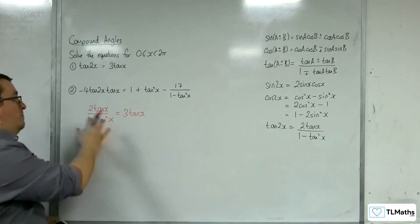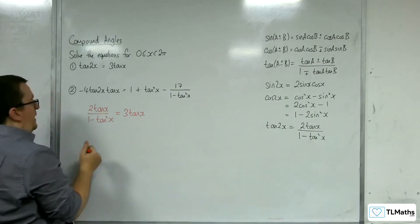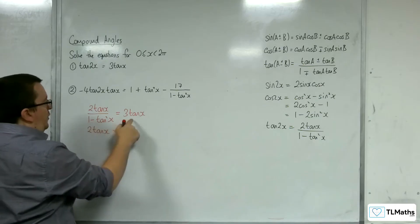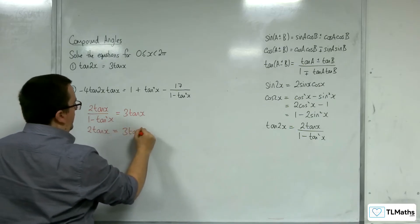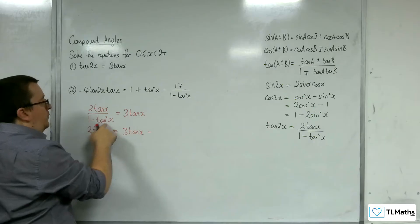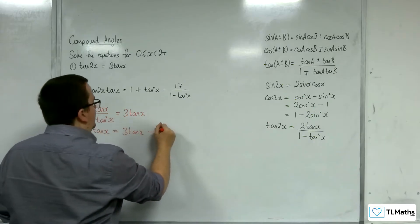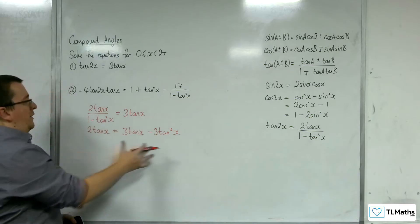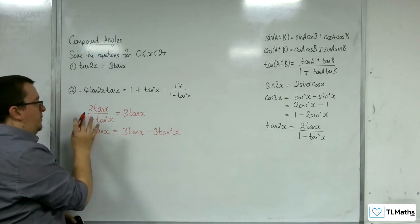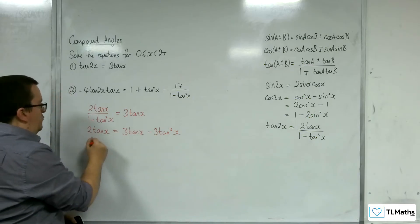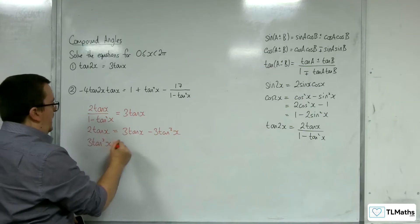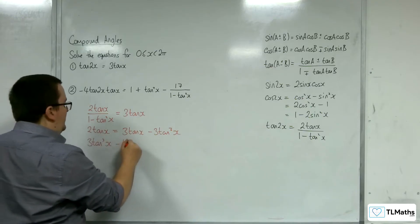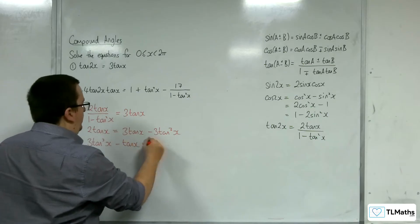Now we're going to want to multiply up by the 1 minus tan squared, so 2 tan x is equal to 1 times 3 tan x, take away tan squared times 3 tan x, so 3 tan cubed x. Let's move everything on to the left hand side. We have 3 tan cubed x, take away the 3 tan x on both sides, so take away tan x is equal to 0.